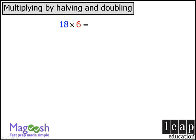So in this example here, we can create a simpler product by taking 18 and halving it to get 9, and then taking our 6 and doubling it to get 12. Now if we know our 12 times tables, we know that this is equal to 108.